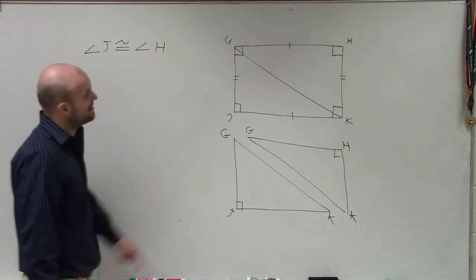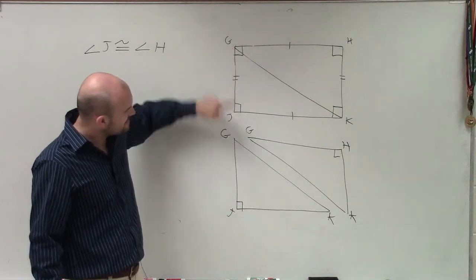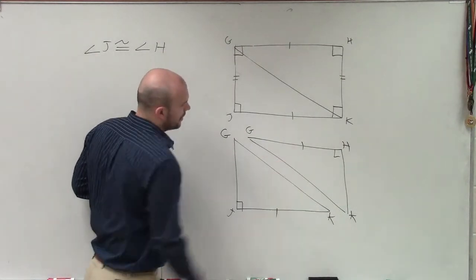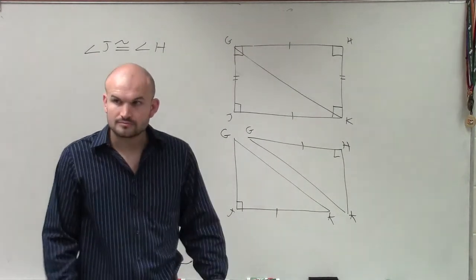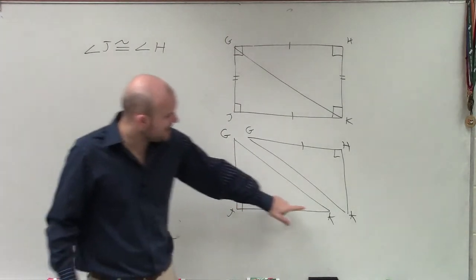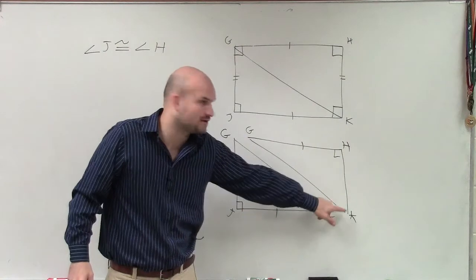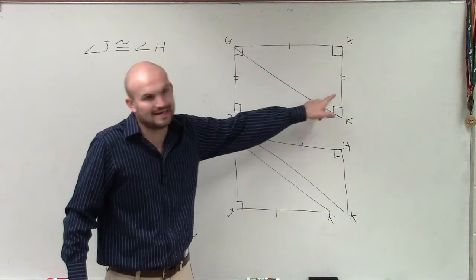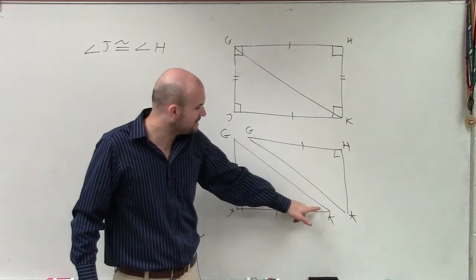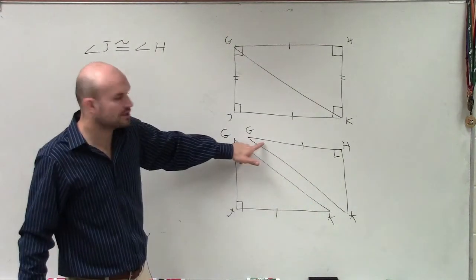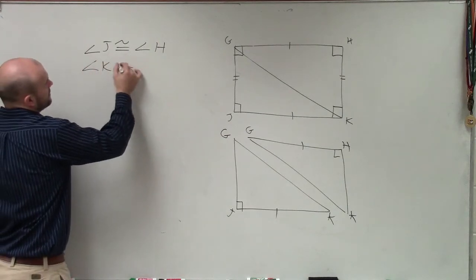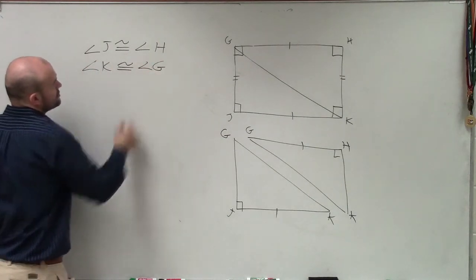But also looking at your congruency statement, we can see that these side lengths — since these are also equal to each other — what we can determine is that angle K is not congruent to the other angle K. These two angles are not equivalent. It doesn't break it up evenly. But we can say that K is congruent to angle G, so angle K is congruent to angle G.